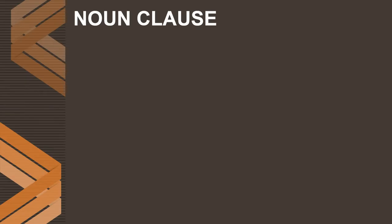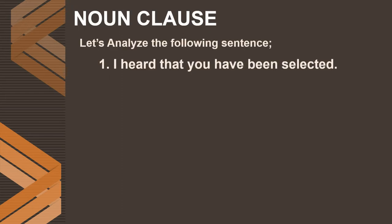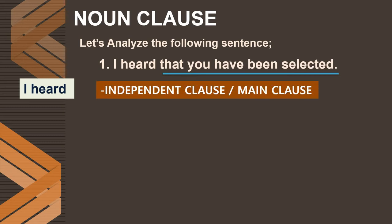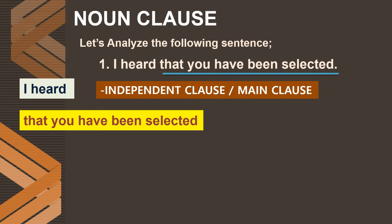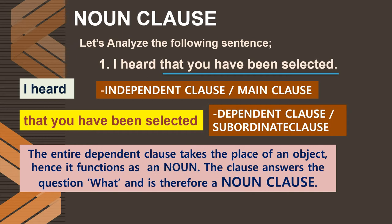Now we go on to noun clauses. Let us analyze the sentence: 'I heard that you have been selected.' Here 'I heard' is the independent or main clause. 'That you have been selected' is the subordinate clause answering the question 'what.' Anything that answers the question 'what' or stands in the place of something is called a noun — so this group of words is functioning as a noun. Therefore, this group of words is called a noun clause.